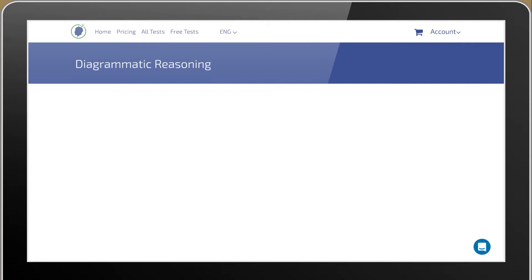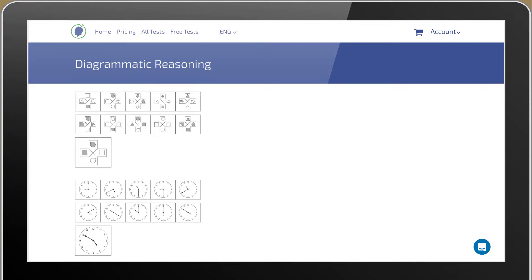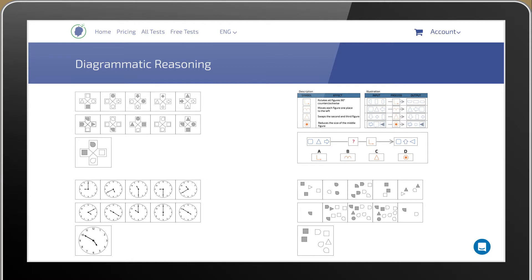Diagrammatic reasoning tests display a series of operators and their outputs. Your task is to infer a set of rules and apply them to new situations.